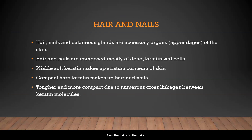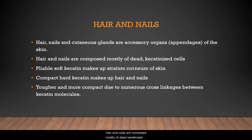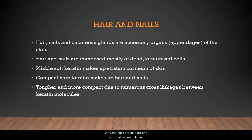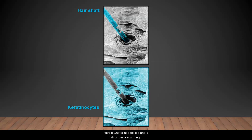Hair, nails, and cutaneous glands are accessory organs or appendages of the skin. Hair and nails are composed mostly of dead keratinized cells with a lot of keratin. The pliable, soft keratin makes up the stratum corneum of the skin, while compact, hard keratin makes up the hair and nails — it's tougher due to numerous cross-linkages between keratin molecules. Here is a hair follicle and hair shaft viewed under a scanning electron microscope, along with a keratinocyte.